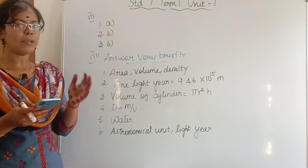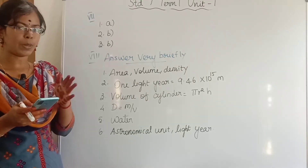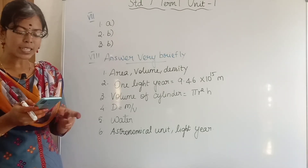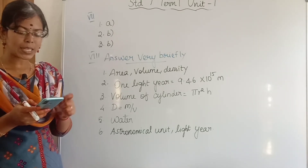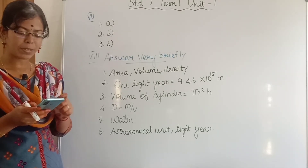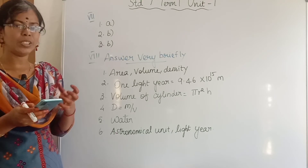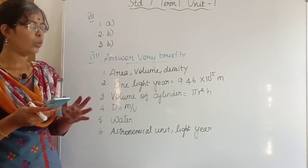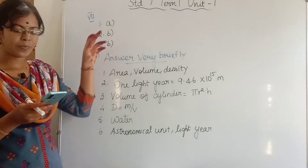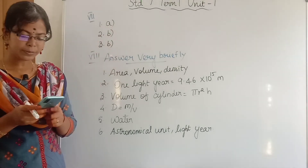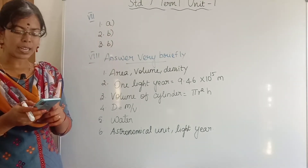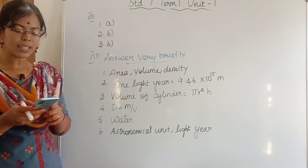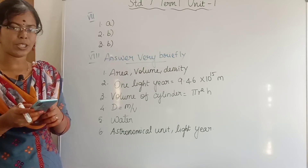The volume of a stone is found using a measuring cylinder. This is a true statement. The reason is that a stone is an irregularly shaped object. Both assertion and reason are true, and the reason is the correct explanation of the assertion. Option A.